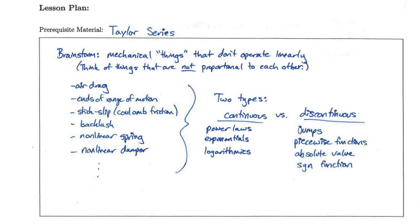The second type is discontinuous. Anything that has a jump — for example, stick-slip friction, piecewise functions that must be described differently depending on direction or speed, or the absolute value or signum function — requires us to write two separate differential equations to describe the system in its two different modes of operation. These are much more difficult to handle.